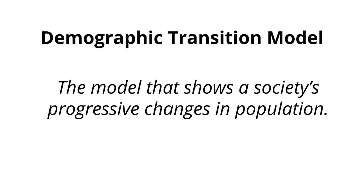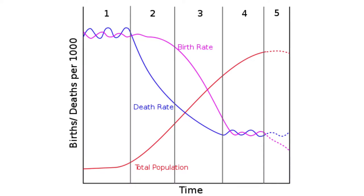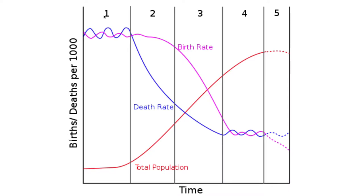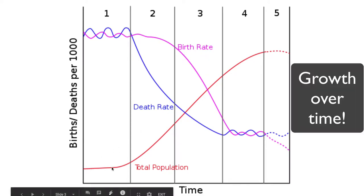The Demographic Transition Model is a model that shows a society's changes in population over time. This model shows time on the x-axis and growth on the y-axis, and it shows how a country goes from stage one all the way to stage four. It's important that you draw this out for yourself so that you can understand the changes in both the death rate and the birth rate and how that contributes to growth in total population over time.